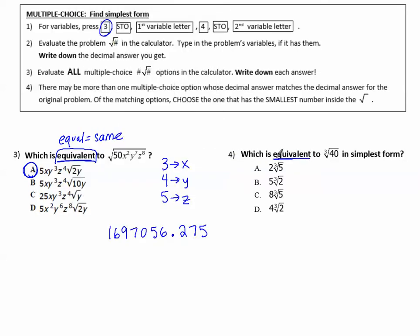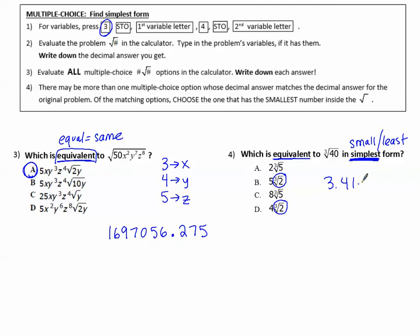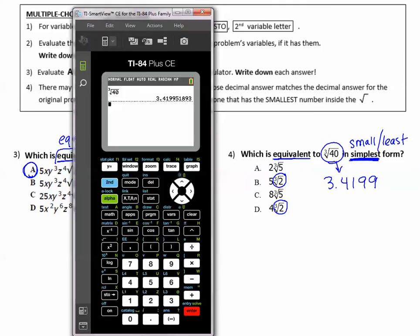Number 4, which is equivalent to cubed root of 40 in simplest form? So there's that word, simplest. We want to think of small or least in the radical. So notice the cubed root of 2 and the cubed root of 2 are smaller than the cubed roots of 5. So I'm going to start with those when I'm checking the answer choices. Let's find cubed root of 40. Cubed root is in the math menu, choice 4, math 4, and then I can type 40, enter. I'm going to write down this value, 3.4199. And I'm going to check the ones first that are the simplest radical. 5 on the outside, and then I need cubed root of 2: math 4, 2, enter. That's a different value, 6.299, so that is not the correct choice.